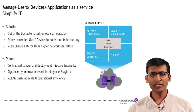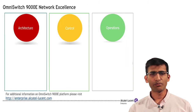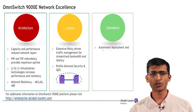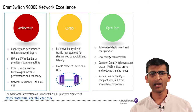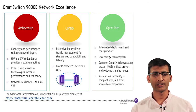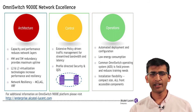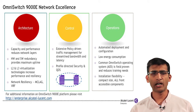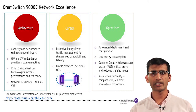The OmniSwitch 9000E provides network excellence with its resilient architecture, intelligent controls and streamlined operations. Finally, the OmniSwitch 9000E family promotes eco-sustainability by using minimal power, thus reducing energy bills and air conditioning costs.